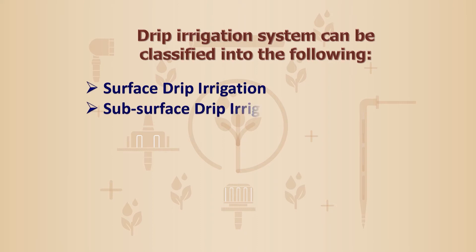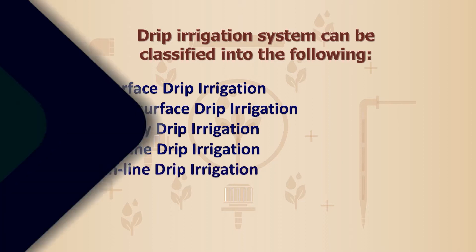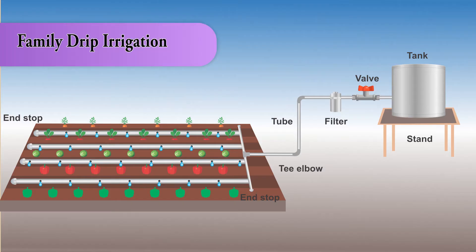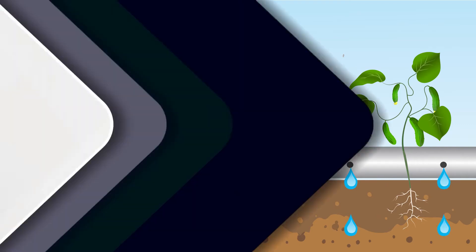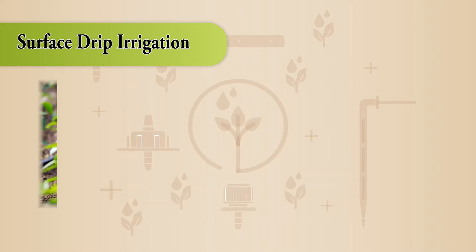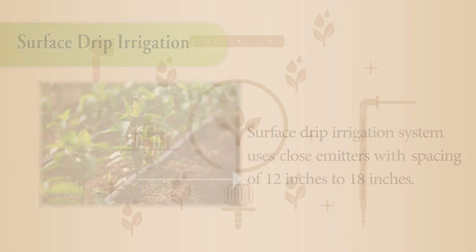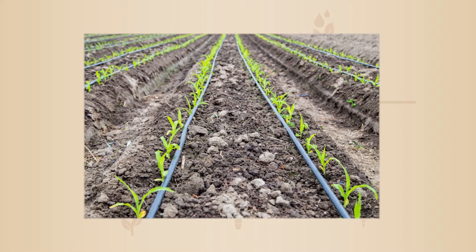Drip irrigation systems can be classified into: surface drip irrigation, subsurface drip irrigation, family drip irrigation, online drip irrigation, and inline drip irrigation. Surface drip irrigation uses close emitter spacing of 12 to 18 inches and a thin-wall drip line injected 1 to 6 inches below the surface. Sub-mains can be permanent or temporary; these systems are often retrieved and recycled yearly.